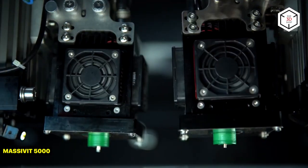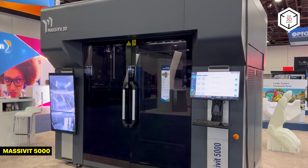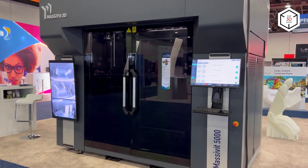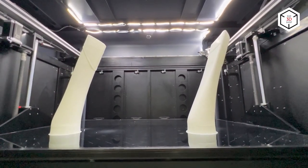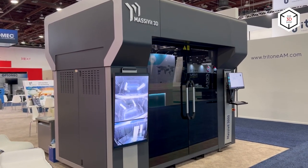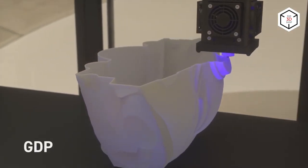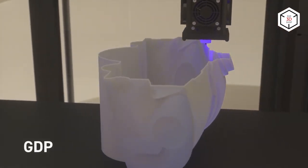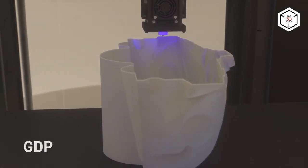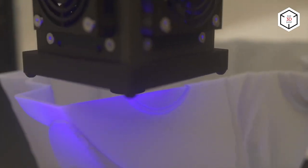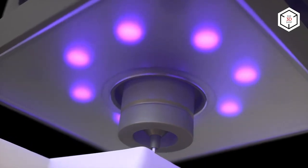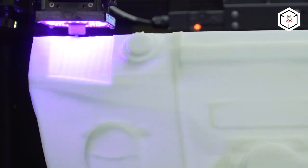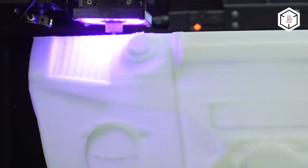The last model on our list is the Massive IT 5000. Massive IT 3D doesn't use traditional vat photopolymerization technology as all the other printers in this overview, but developed their own gel dispensing printing technology. As expendable material, the printer uses proprietary viscous photopolymer gels that are immediately cured by built-in UV lamps. The thickness of each layer depends on the print speed and varies from 0.5 to 1.5 millimeters.